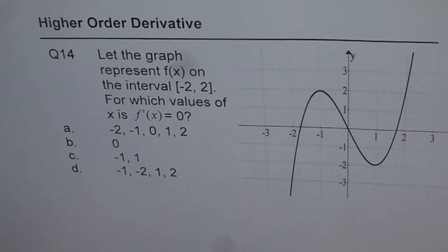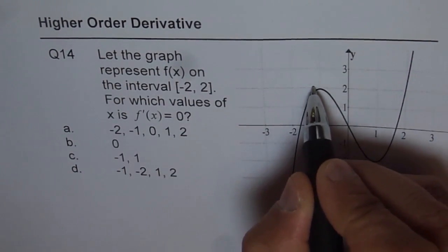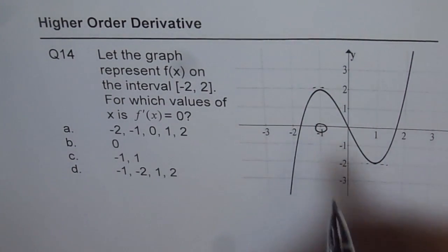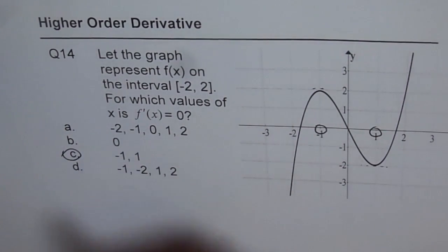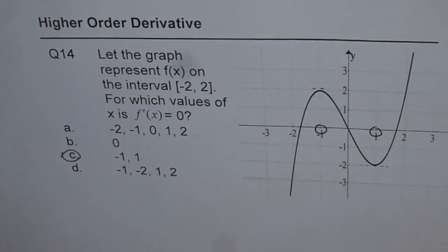The derivative will be zero at these points. The answer is -1 and 1. These are the two solutions, so C is the option.